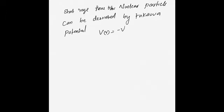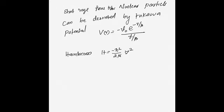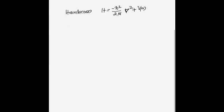The Yukawa potential is V = −V₀ e^(−R/β) / (R/β), where V₀ and β are constants. The Hamiltonian is H = −ℏ²/2μ · ∇² + V(R), where ∇² is the Laplacian operator, μ is the proton-neutron reduced mass, and R is the proton-neutron separation.